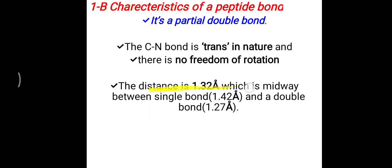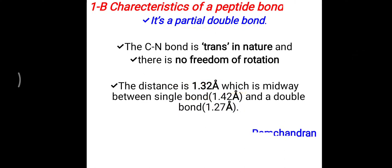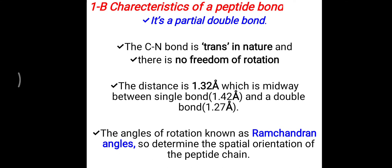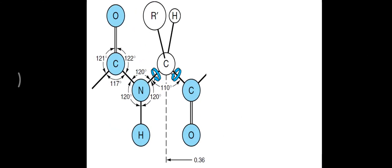The distance of 1.32 Å makes the peptide bond a partial double bond. Further, the angle of rotation is known as the Ramachandran angle, which determines the spatial orientation of the peptide chain. Here there is a C=O group and an NH₂ group forming C-O-N-H, making a peptide bond — and we can say there is a fixed peptide bond seen.